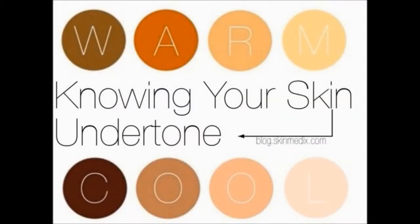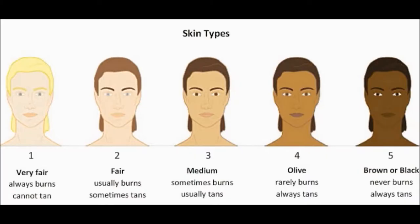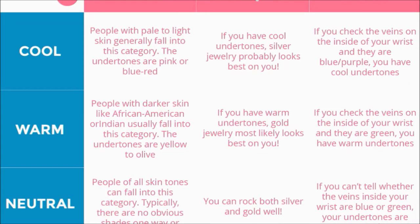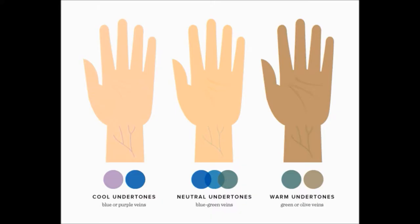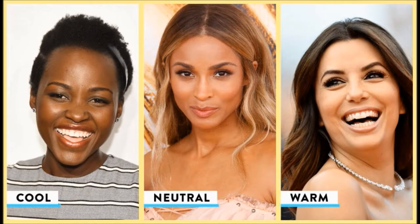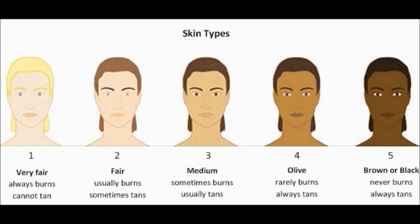Human skin color can vary from almost translucent to almost black. This range of colors comes from the amount and type of pigment called melanin found in our skin. There are two types of melanin: eumelanin and pheomelanin. In general, the more eumelanin in your skin, the darker your skin will be.